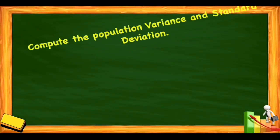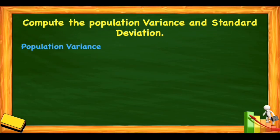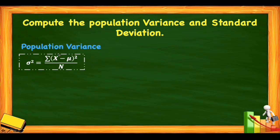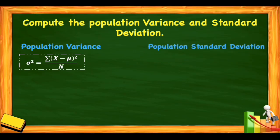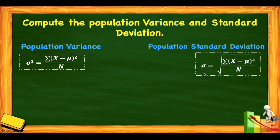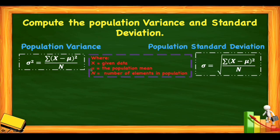Next, we will compute the population variance and standard deviation. The formula for population variance uses the symbol sigma squared (σ²): sigma squared equals the summation of (x minus mu) squared over n. To get the standard deviation, we need the population variance first. The standard deviation is sigma (σ), where x is the given data, mu is the population mean, and n is the number of elements in the population.